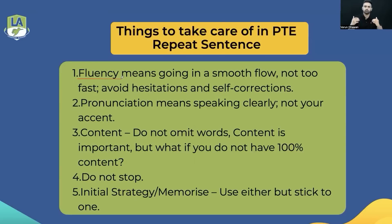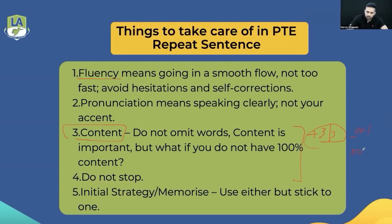जो naturally बोल सकते हो, जितना clear बोल सकते हो, बोलो — अपना accent change नहीं करना है। Content एक tricky part है। Content कैसे mark होते हैं, repeat sentence में ध्यान रखना — Pearson की guideline के according 3 में से 3 लेने के लिए आपको 100% content correct sequence में बोलना पड़ेगा। अगर आप 50% से ज्यादा या 100% से कम बोलते हैं तो 3 में से 2 number मिलेंगे। अगर 25% से ज्यादा लेकिन 50% से कम बोलते हो तो 3 में से 1 number मिलेगा।